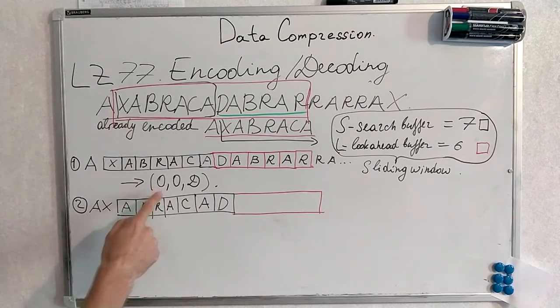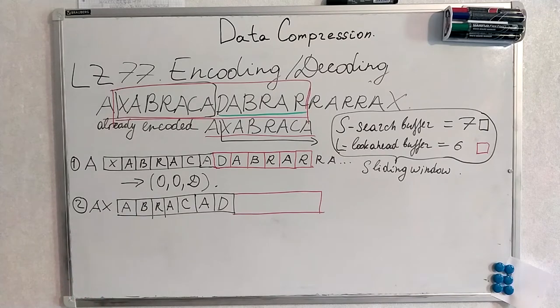0, 0, D. 0 length, 0 offset and D. And I have moved our sliding window to the right. One symbol forward. Now we have in our search buffer D. And A and X already hanging out somewhere outside sliding window.